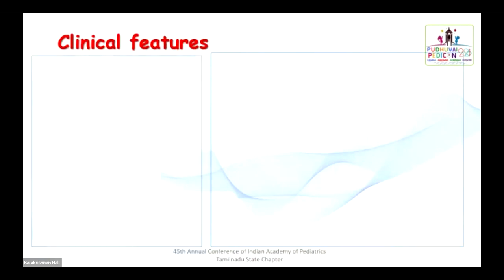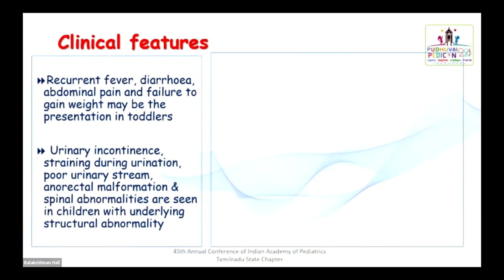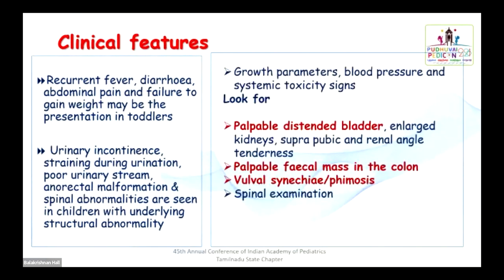Apart from routine clinical manifestations, children can also present with recurrent fever without focus, diarrhea, abdominal pain, or failure to gain weight in toddlers. Urinary incontinence, straining during urination, poor urinary stream, anorectal malformation, and spinal abnormalities can be seen in children with underlying structural abnormalities. Always give importance to growth parameters, blood pressure, and systemic toxicity signs. Look for palpable distended bladder, enlarged kidneys, suprapubic and renal angle tenderness, palpable fecal mass, vulval synechiae in girls, phimosis in male children, and complete spinal examination.